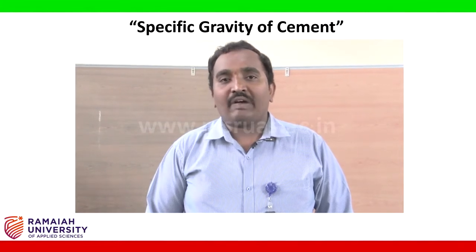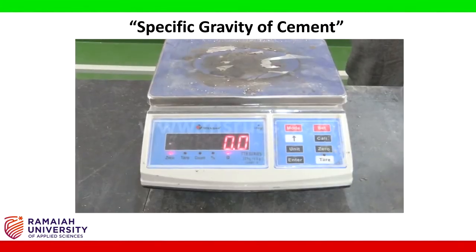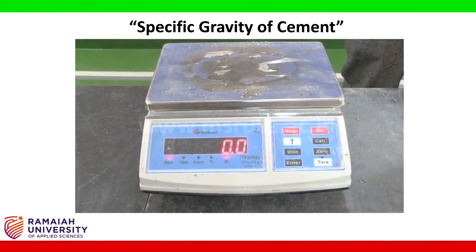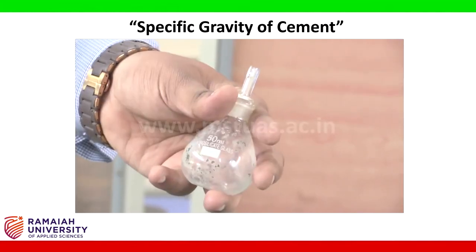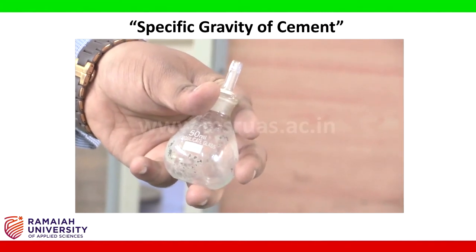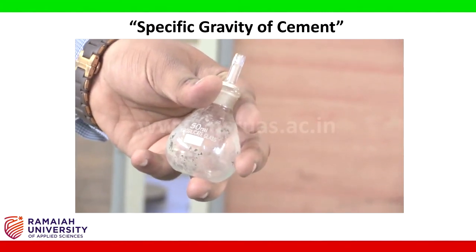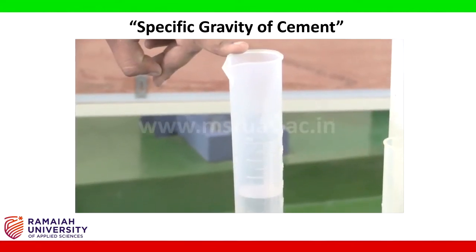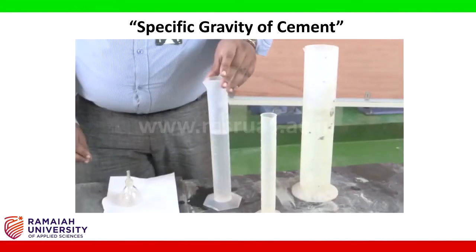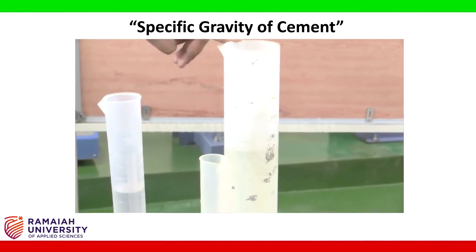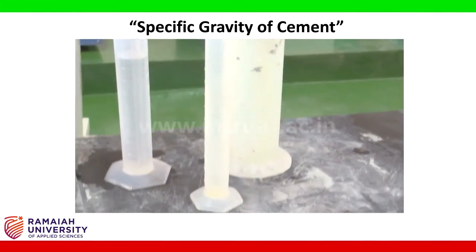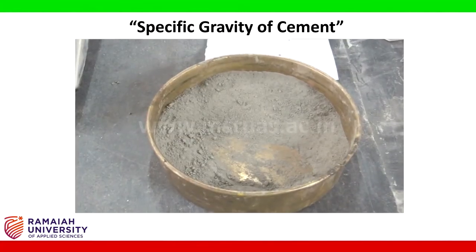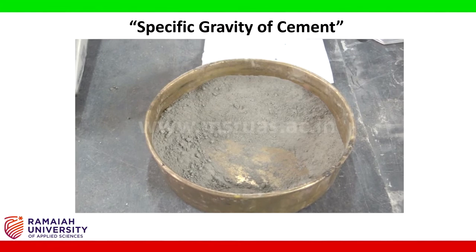Let us look at the apparatus required. The first apparatus required is a weighing balance of 1 gram accuracy. The second apparatus is the density bottle, also called the specific gravity bottle. The third thing I require is kerosene. And lastly, I require water. I have also taken a cement sample for which the specific gravity has to be determined.